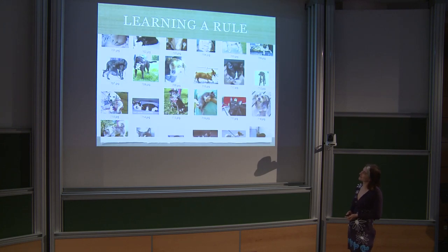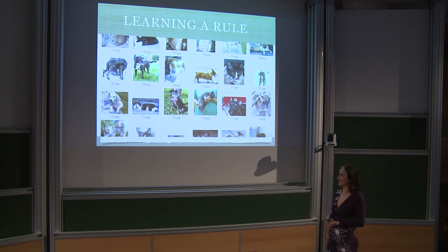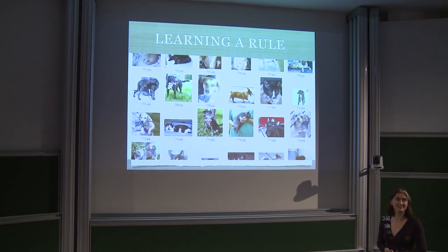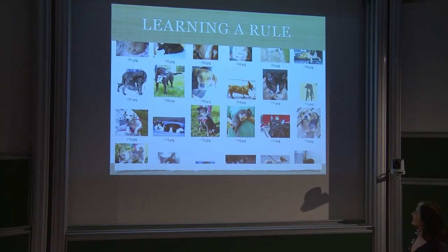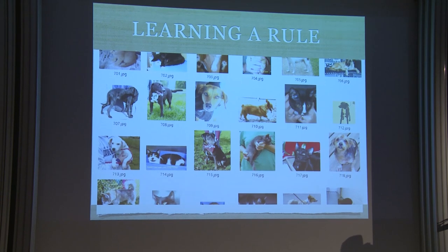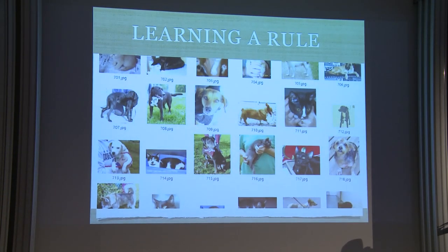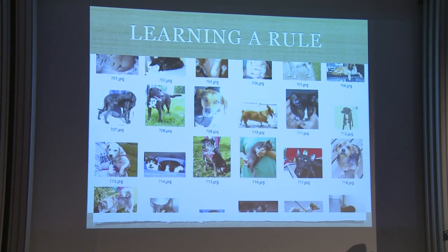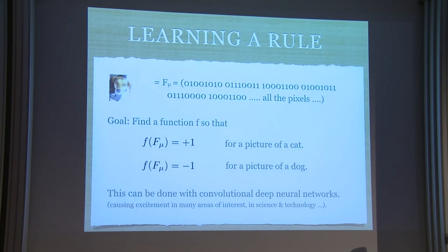The problem I will be concerned with today is learning a rule. What do I mean by learning a rule? A kind of example would be that I give you a number of photos of cats and dogs, and ask you to stare at them so that I tell you who is a cat and who is a dog. Then I give you new photos. At some point when you were little this happened to you — your parents tell you this is a cat, this is a dog.